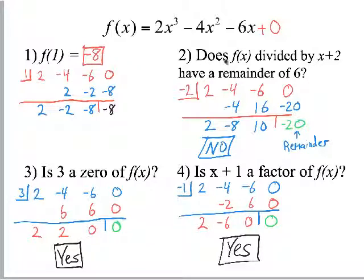Does f(x) divided by x plus 2 have a remainder of 6? So, if you divide by x plus 2, well, you're checking negative 2 as a 0. So, you check negative 2 as a 0, and the answer is your remainder. So, if I try to find negative 2, because it's what makes this a 0, do synthetic with these numbers again. My remainder is negative 20, which is not 6. So, no, it is not true for what it's saying.